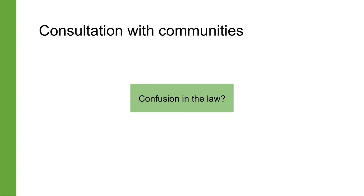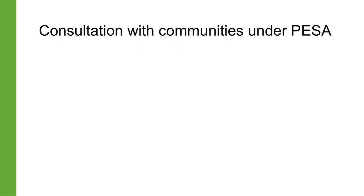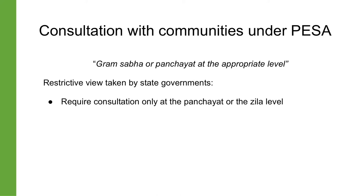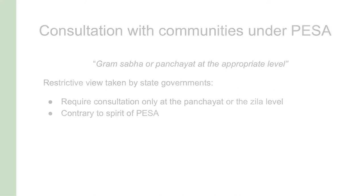Here you should remember a confusion in the law referred to in the previous module. Under the PESA law, the Gram Sabha has to be consulted before there is any developmental activity in a scheduled area. However, the words of the law are actually 'Gram Sabha or the Panchayat at the appropriate level.' Several state governments have taken a restrictive view and require consultation only at the Panchayat or Zilla level, which goes contrary to the purpose behind the PESA law. The Hasdeo Arand coal field, which is part of North Chhattisgarh, is a good example — mining projects are coming up there on a big scale and the way communities are using both these laws has been remarkable.